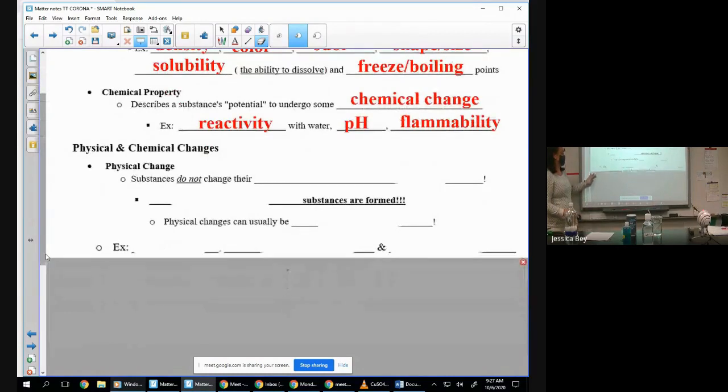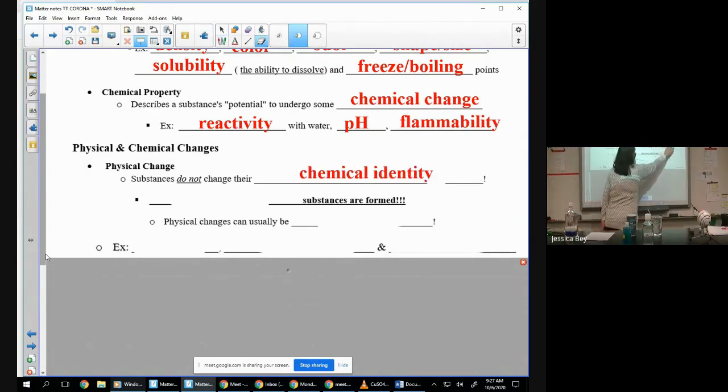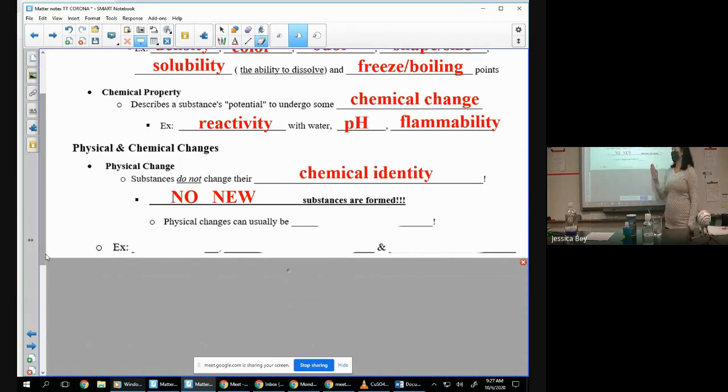Let's talk about chemical and physical changes, shall we? In a physical change, substances do not change their chemical identity. So whatever chemical it was at the beginning of the change, it is exactly the same at the end of the change. Substances do not change their chemical identity. Another way to say that is that no new substances are formed, nothing new is formed.